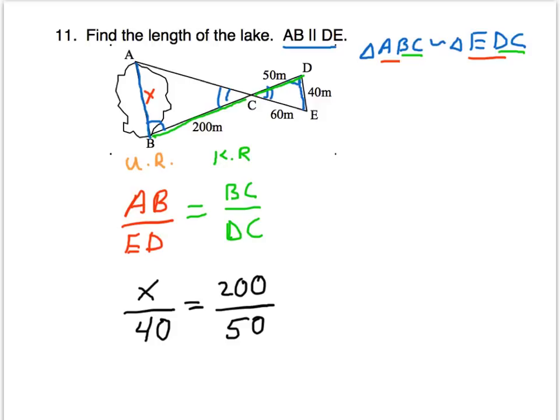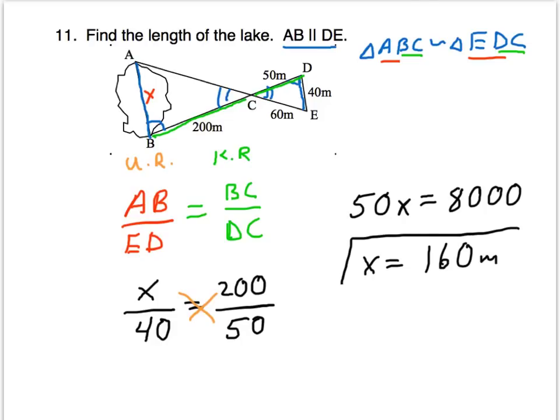Now we'll solve for x using cross multiplication. So the lake is 160 meters across.